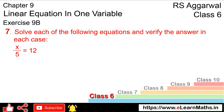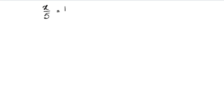Let's do question number 7 of exercise 9B. That is linear equation in one variable. Question number 7 is: solve each of the following equations and verify the answer. Our equation is x upon 5 equals to 12. Let's write our equation: x upon 5 equals to 12.